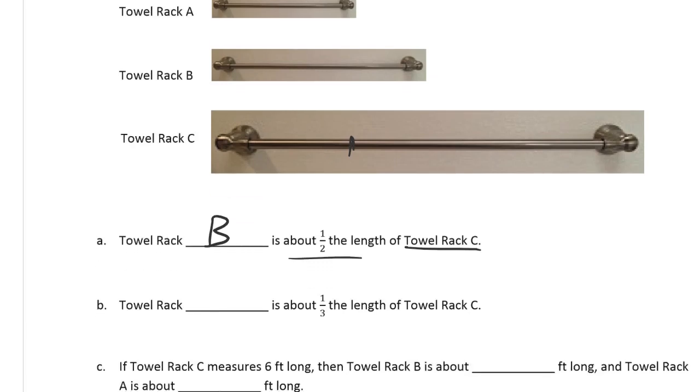So towel rack, something is about the length, third of the length of towel rack C. So that, would that be a third? If we had another length that's about the same, that could be, yeah, towel rack A could be the third of towel rack C.